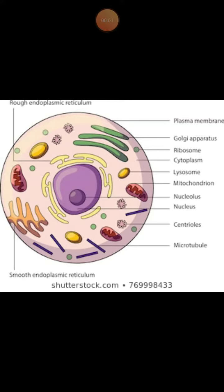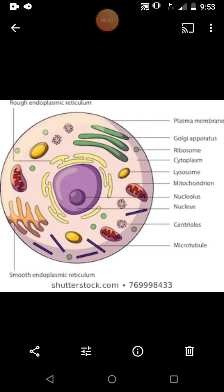Another cell type is the eukaryotic cell. This is an image of a eukaryotic cell. In this you can see a definite nucleus is present. 'Eu' means true and 'karyon' means nucleus, so a definite nucleus is present in this cell.